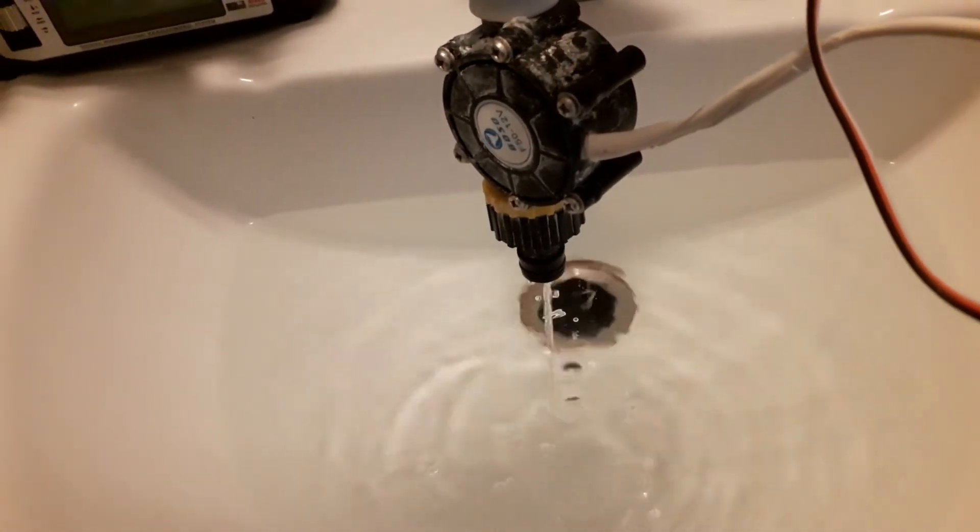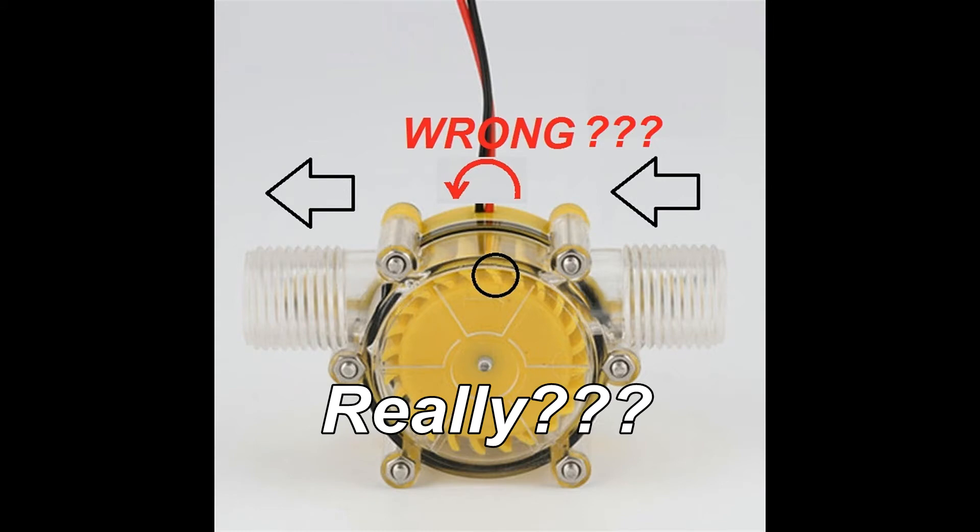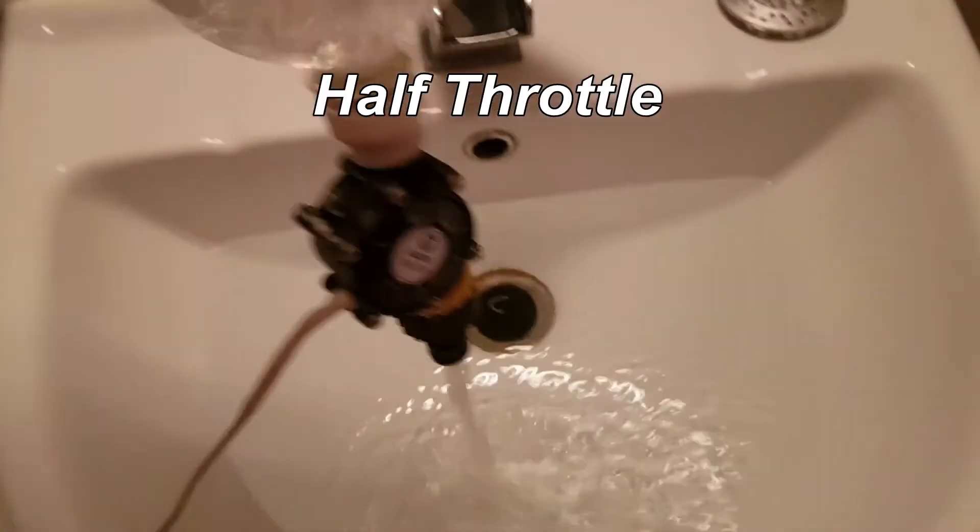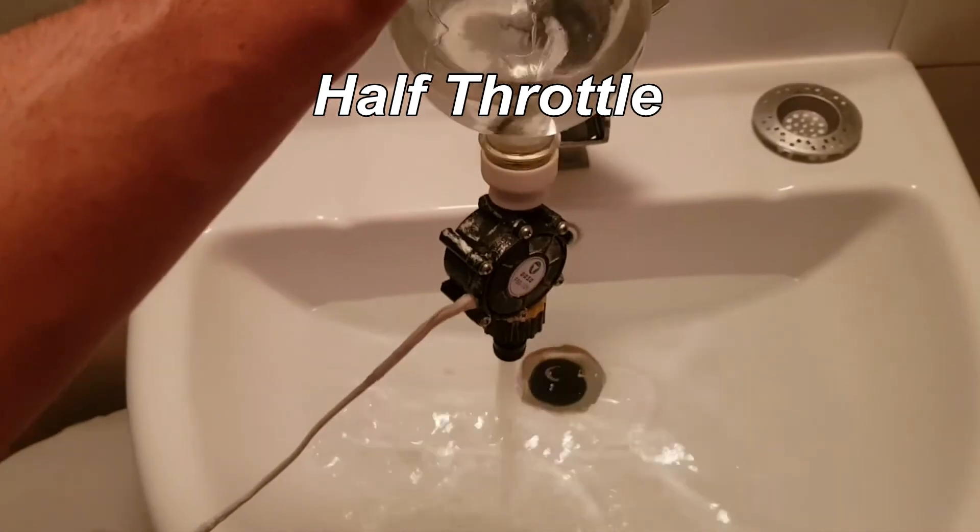Let's try to reverse the motor. In theory, it should be wrong as vanes should spin in the direction they are bent. As you can see, it works even at half of the throttle.